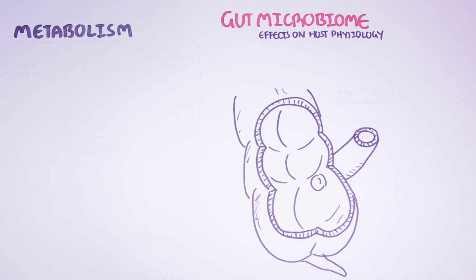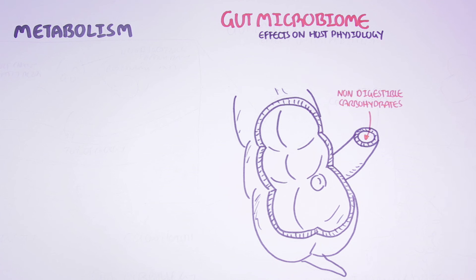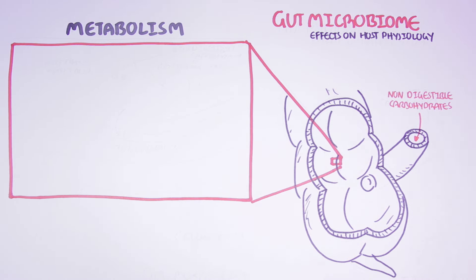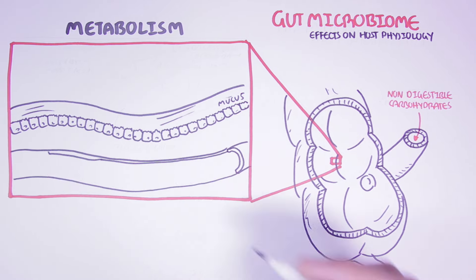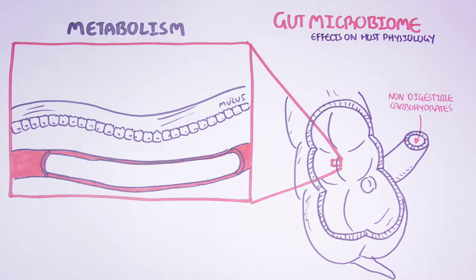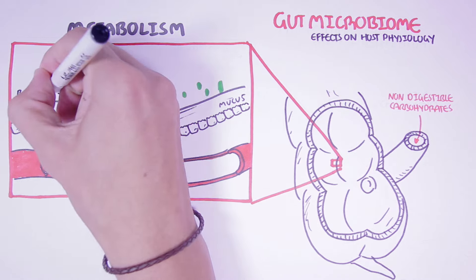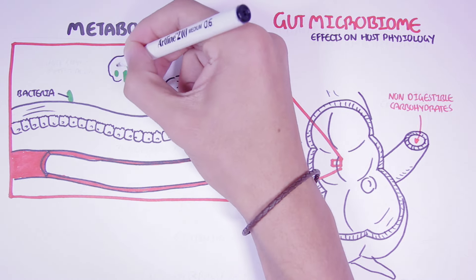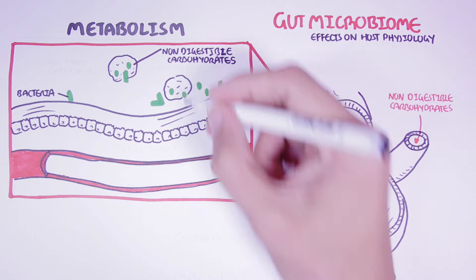Foods that are not digested and absorbed in the small intestine, such as non-digestible carbohydrates, will reach the large intestine, and here the carbohydrate will undergo fermentation by the bacteria. Here we have the colonocytes with mucus on top and the blood supply. Within the lumen of the colon, we find the bacterial communities waiting for food to come. The non-digestible carbohydrate particles will reach the colon and will then be fermented by the bacteria.